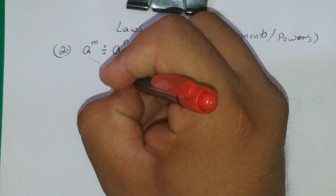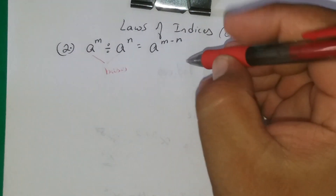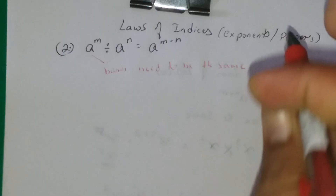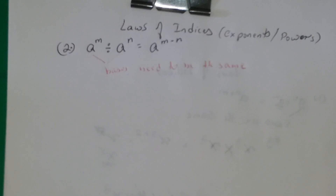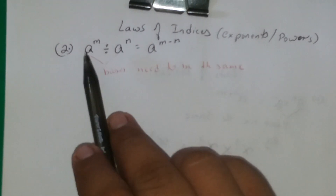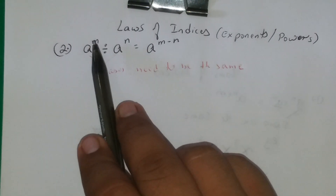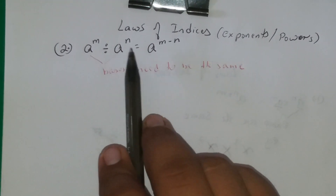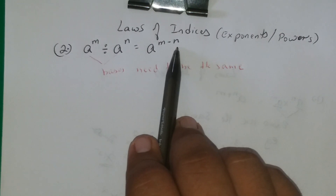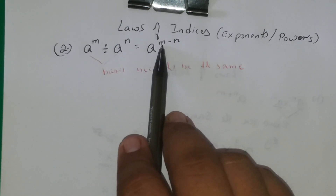Remember, the letter here is talking about the base, and in order for us to use this law, the bases need to be the same — x and x, y and y, or numbers like two and two, three and three. They need to be the same, and there needs to be a division between them. If the numbers are the same and you have powers connected, then it equals the base and you just subtract the powers. Notice it is very specific: the numerator power comes first.